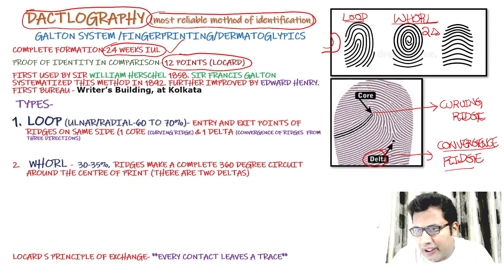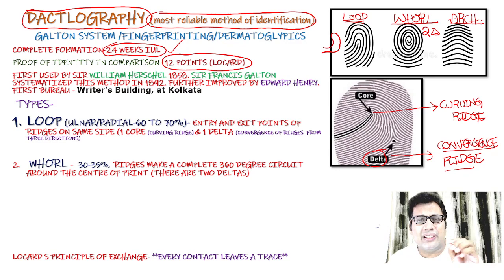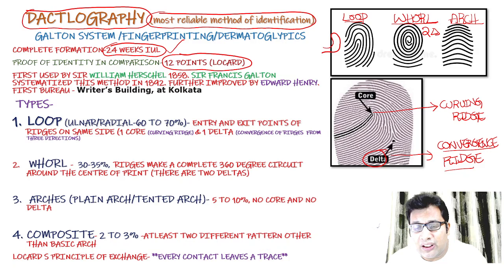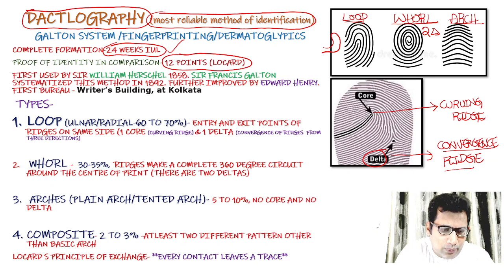The arch — remember, there is no core and no delta. The arch can be a plain arch or a tented arch, which is at an angle. Lastly, that is the composite. Composite means there are at least two different patterns other than the basic arch. Around 2 to 3 percent of cases are composite.